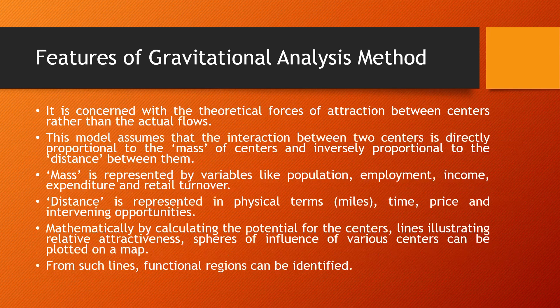The features of the gravitational analysis method: it assumes two centers, where the interaction of two settlements is directly proportional to their mass — including population, employment, income, and expenditure — and inversely proportional to the distance between them, measured as time, price, or intervening opportunities.